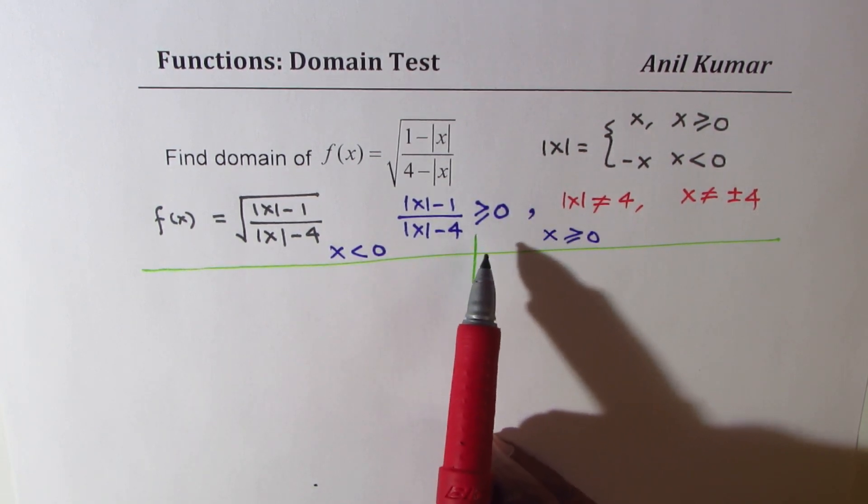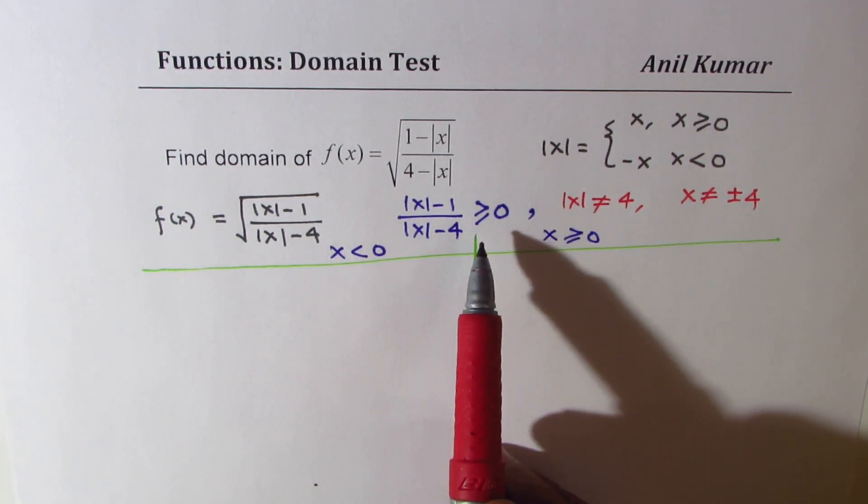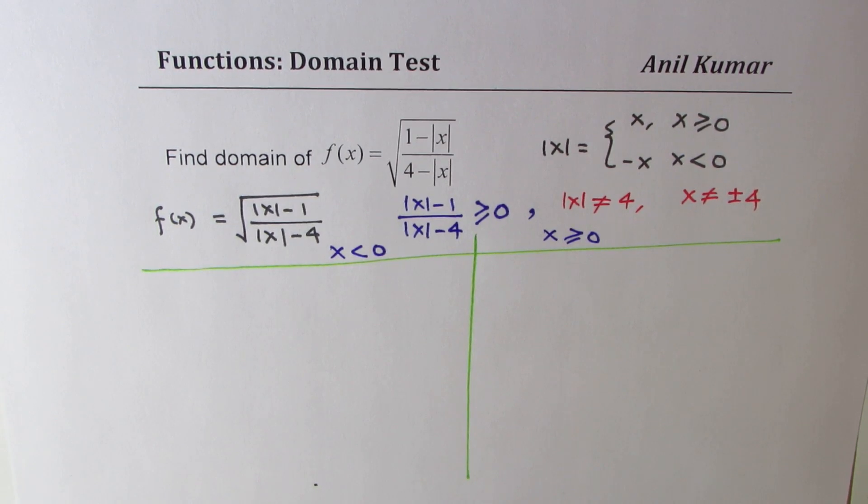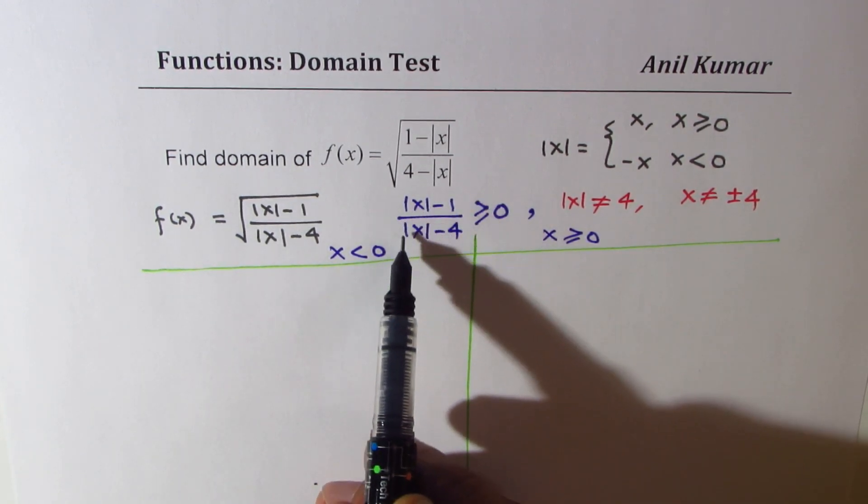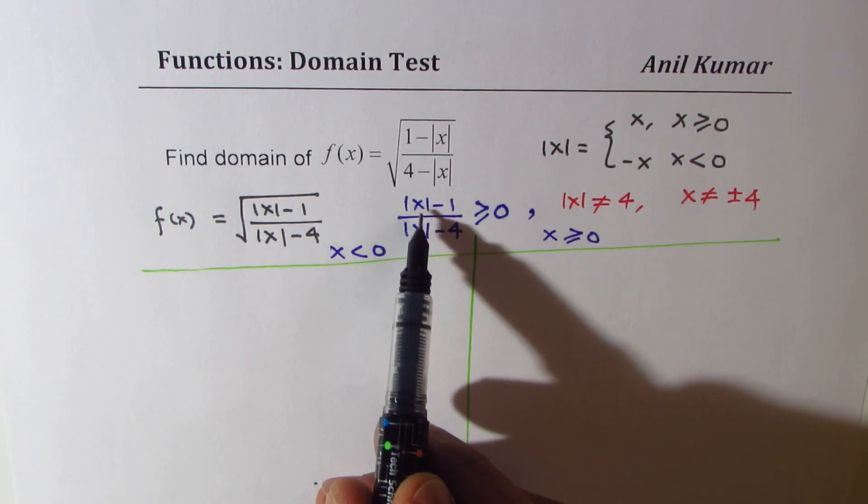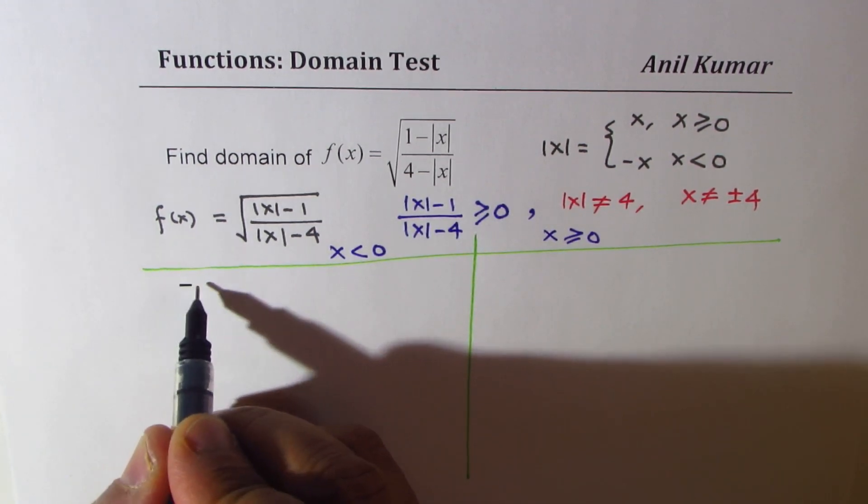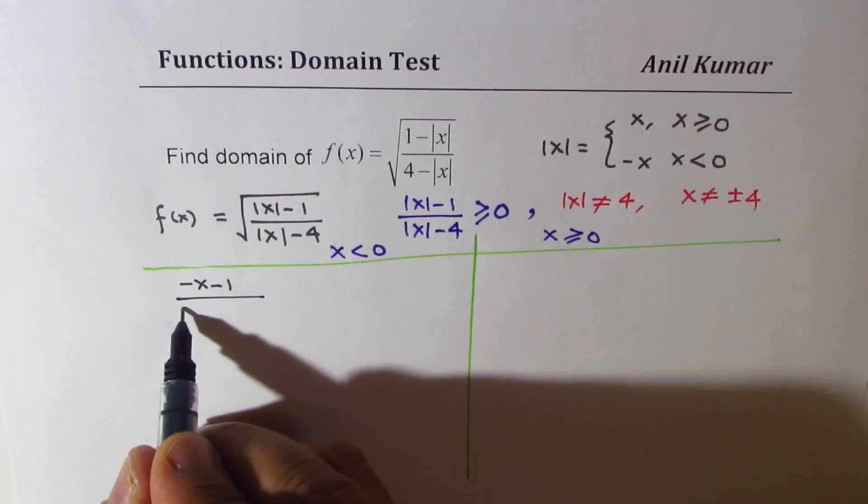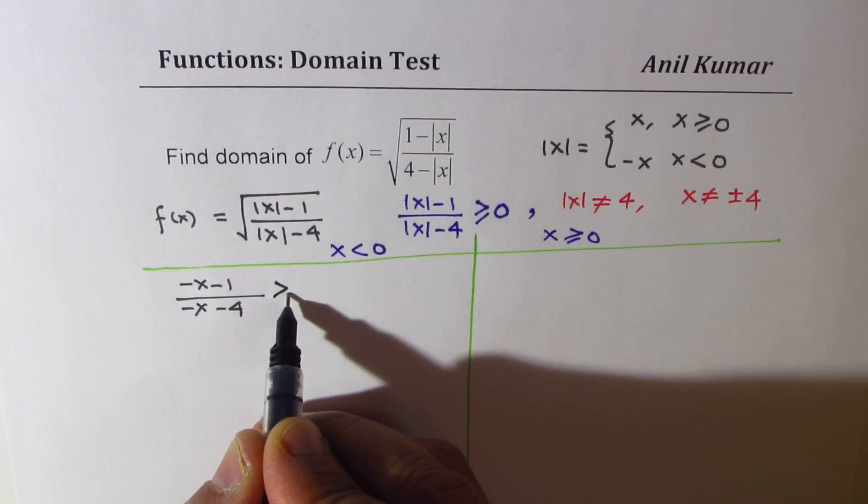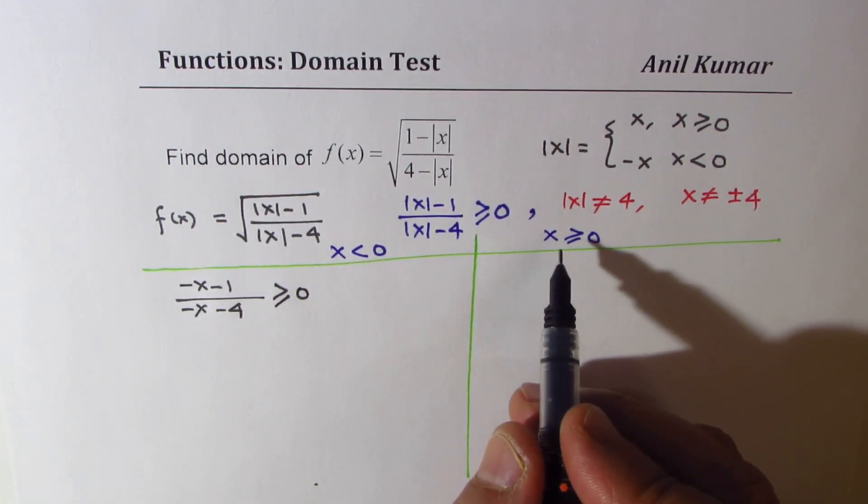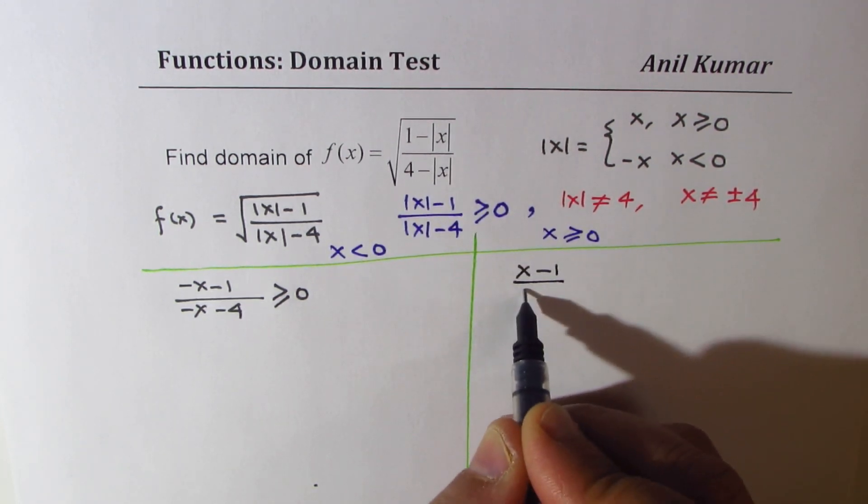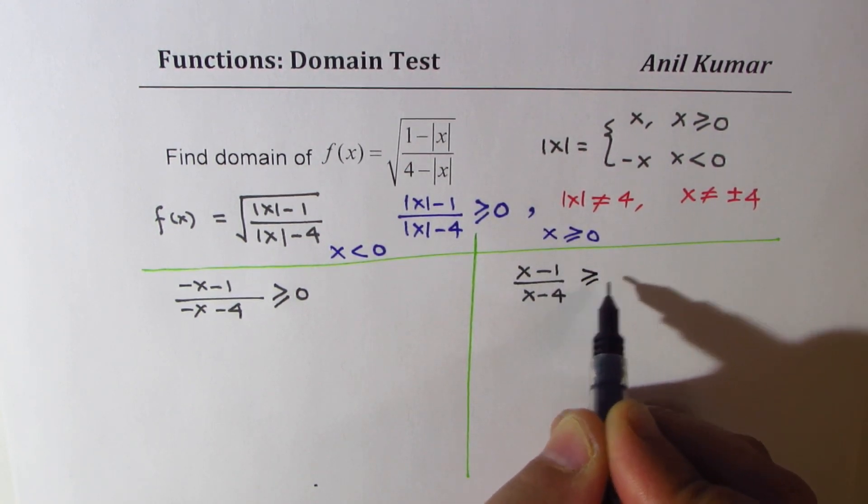Now we have to see the interval where the whole function is non-negative. It could be 0. It is valid at 1 for example. So basically we are looking into this part. Now when x is less than 0, absolute x will be written as negative x. So we will replace it with negative x, negative 1, negative x for absolute x. And the inequality we want to show that this should be greater than or equal to 0. Here, when x is greater than 0, absolute x is positive x. So we get x minus 1 over x minus 4 greater than or equal to 0.